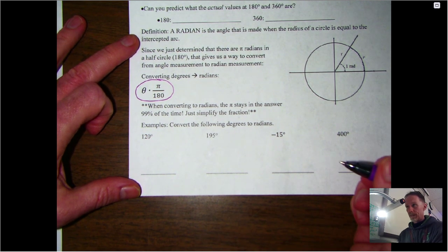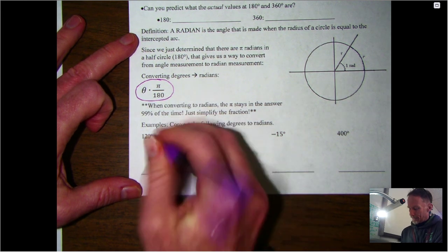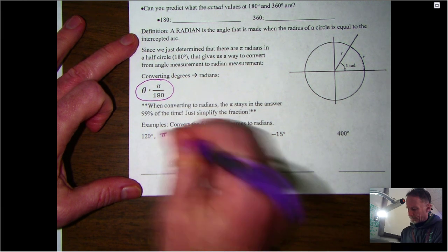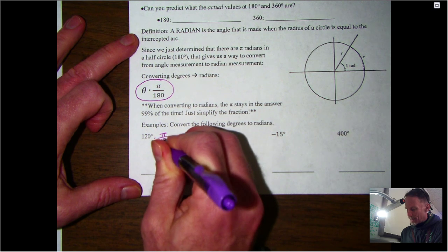I'm going to start with degrees, multiply by π over 180. Now the good news is we don't need to worry too much about the π. The π is going to be part of the answer, so the only thing we're going to do is simplify the fraction 120 over 180.